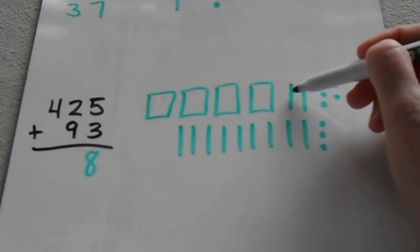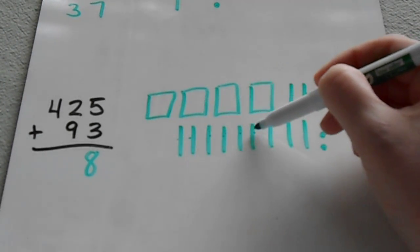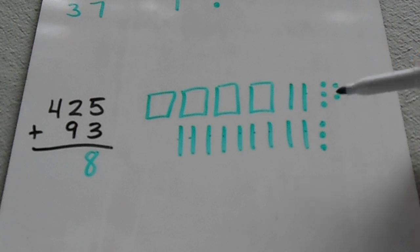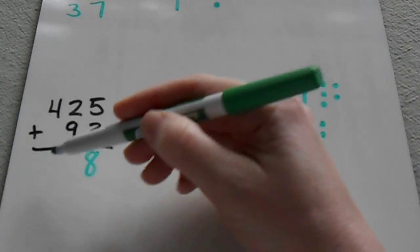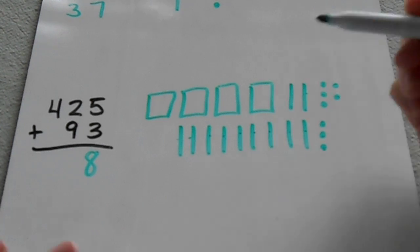Now I'm going to count up my tens place: 1, 2, 3, 4, 5, 6, 7, 8, 9, 10, 11. Now most students know that you can't put a two-digit number here in the tens place, so we have to regroup.